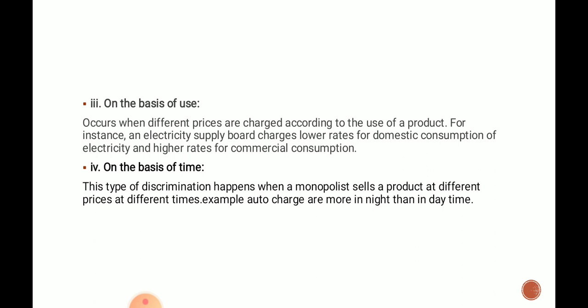The next type is price discrimination on the basis of use. This occurs when different prices are charged according to the use of the product. For instance, an electricity supply board charges a lower rate for domestic consumption of electricity and a high rate for commercial consumption. For agriculture production, the price for electricity supply is zero, while for commercial purpose it is high. That is called price discrimination on the basis of use.